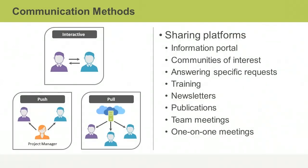Communication methods are the ways in which information is shared among project stakeholders. There are basically three classifications of communication methods: interactive, push, and pull. Interactive communication involves an exchange of information between two or more people. This multi-directional method of communication is considered to be the most efficient way to make sure all parties achieve a common understanding of what is communicated.